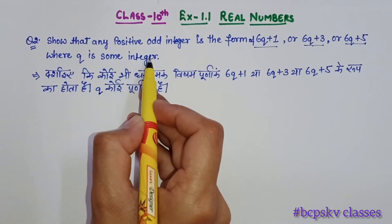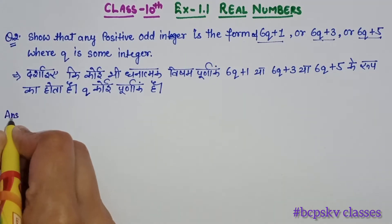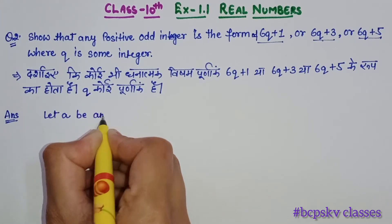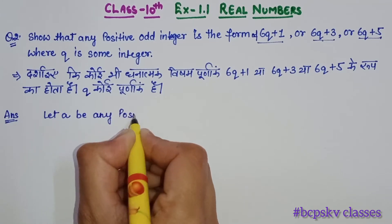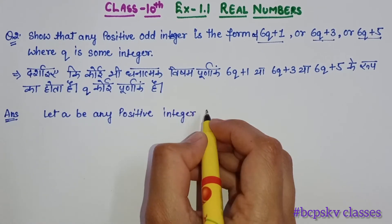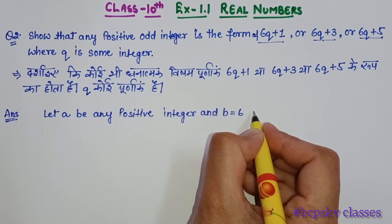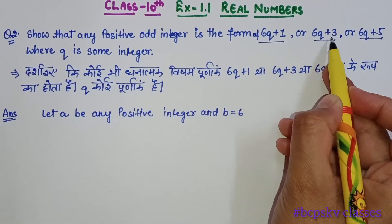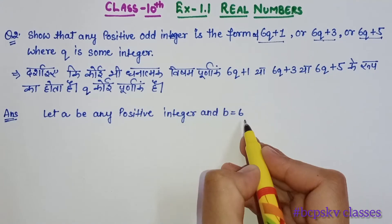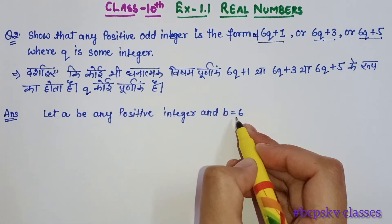And why is there no even integer here? Let's start. Let 'a' be any positive integer and b equal to 6. Why is b equal to 6? Because we have the forms 6q plus 1, 6q plus 3, 6q plus 5 — these are made with 6. If we had 5q plus 1, we would have 5; if 4q plus 1, we would have 4. That is why we let b equal to 6.